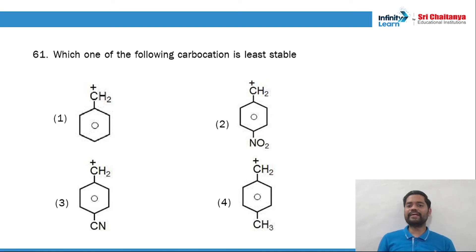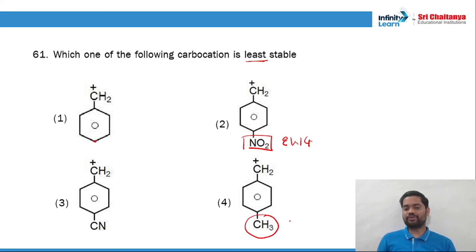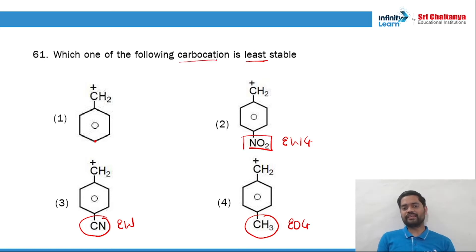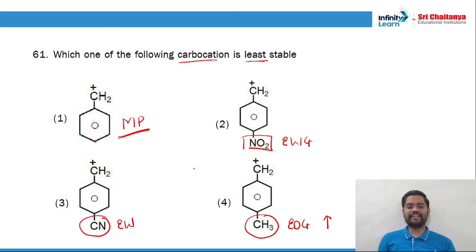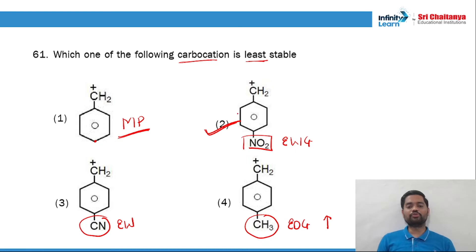Question 61: which of the following carbocations is least stable? No group at para is a midpoint. The NO2 group is electron-withdrawing. CH3 provides hyperconjugation, which is electron-donating. Cyanide is also electron-withdrawing. To decrease the stability of a carbocation, we need electron-withdrawing groups. NO2 is one of the strongest electron-withdrawing groups compared to cyanide. So option number 2 is the right answer.